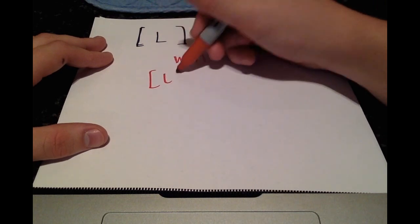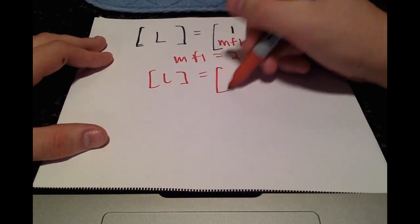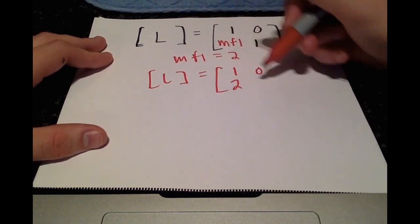So L, we can write out, is 1, 0, 2, 1. Check.